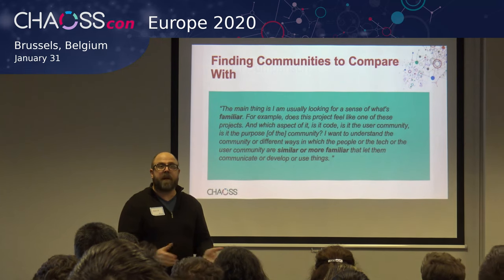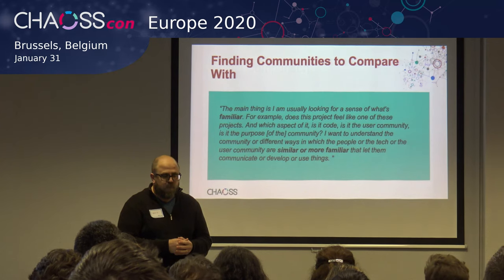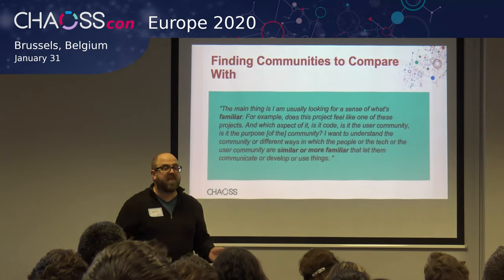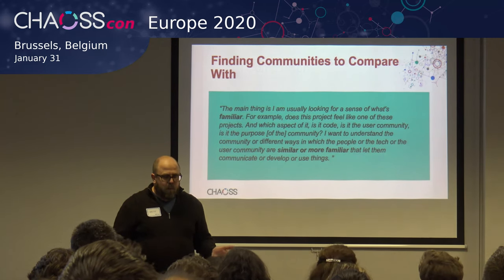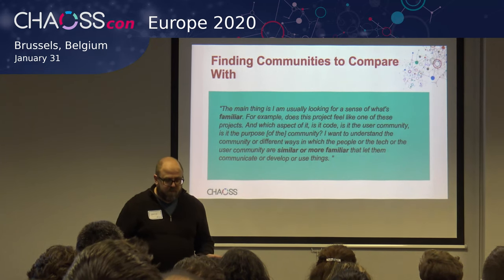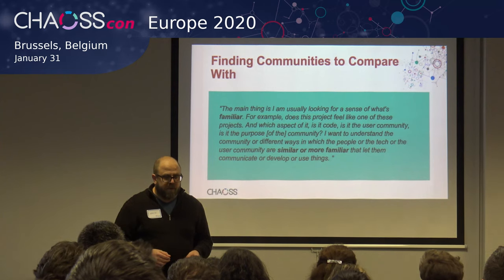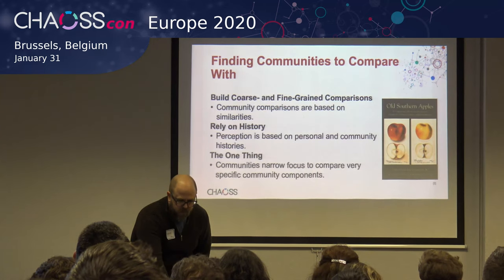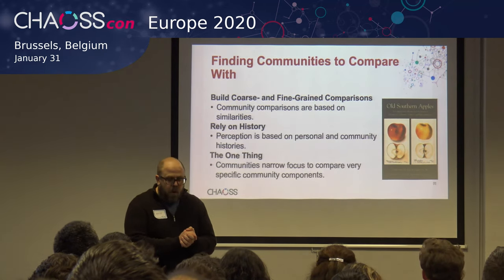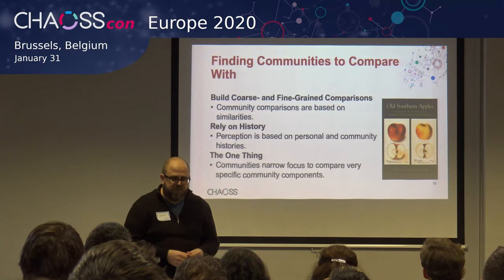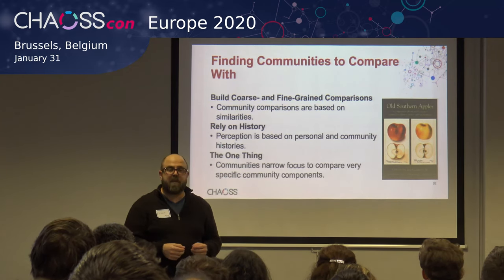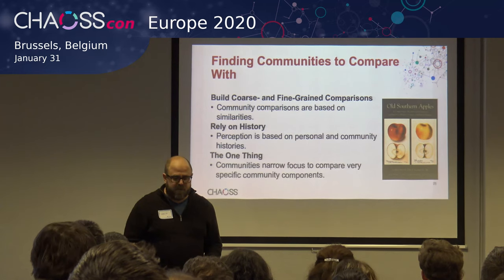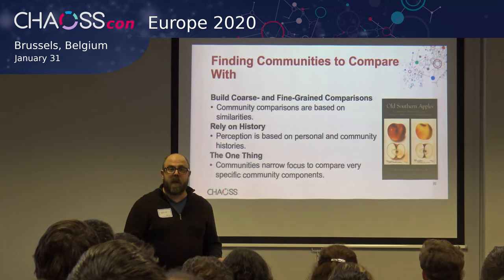The first step is we find communities to compare with. One thing that continually came up in the interviews is that we like to make apples-to-apples comparisons. We want to compare communities that are similar to ourselves or similar to the projects we're on, and there is an aversion to comparing communities that we think may be different. The search for comparable communities often begins with a broad community generalization, and then we narrow the focus down to similar key components between communities.